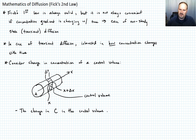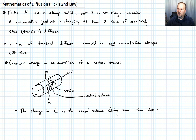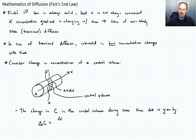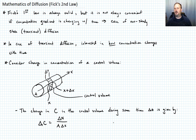We need to specify this over some time delta t. The change in concentration delta C is going to equal the change in the number of atoms delta N divided by the volume. The volume in this case is A times delta x. Let's call that Equation 1.